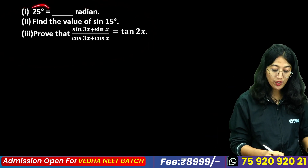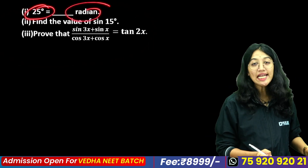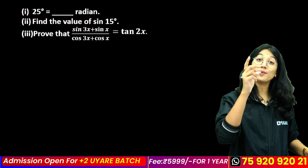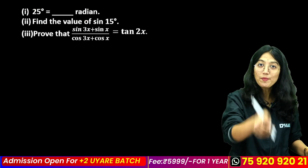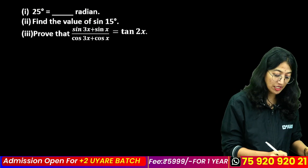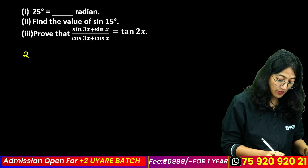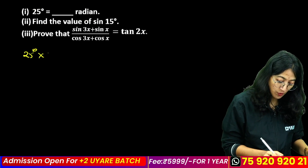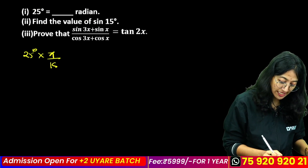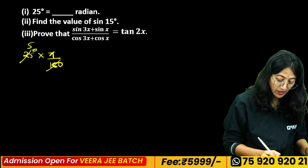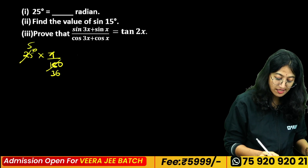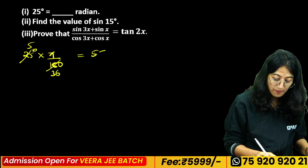We have an angle conversion question. Multiply degrees by π/180. So 25 degrees × π/180 = 5π/36 radians.